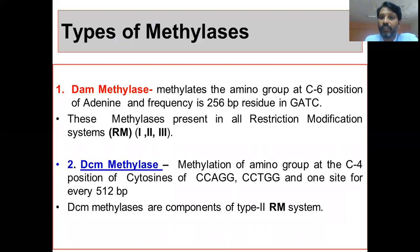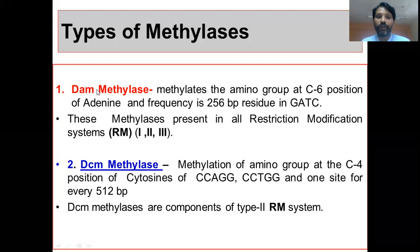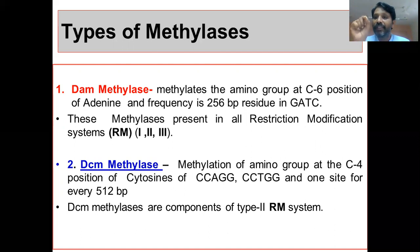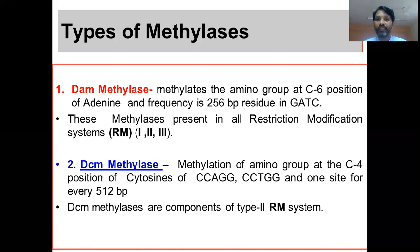There are two types of methylases: one is DAM — D-A-M methylases — and the second one is DCM — D-C-M methylases. In DAM methylases, A stands for adenosine, indicating that these methylases specifically methylate only adenosine. Whereas DCM methylases methylate only cytosine.